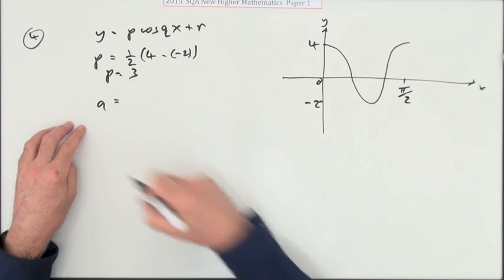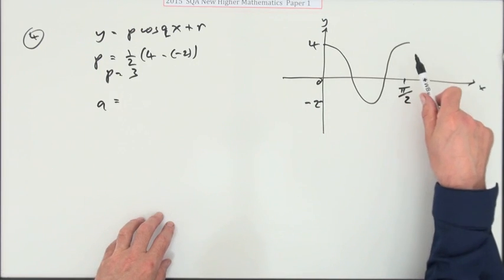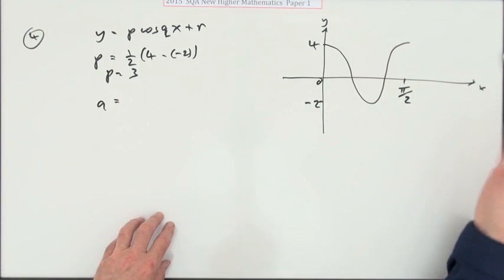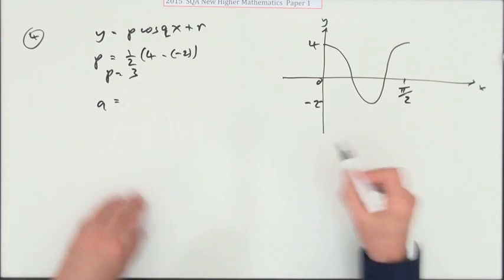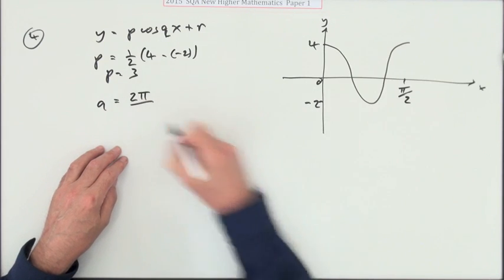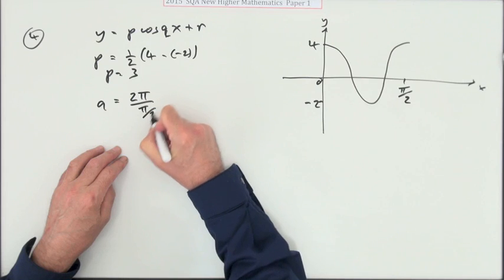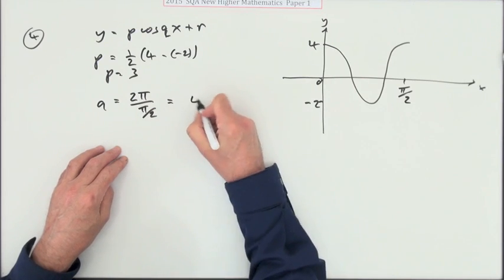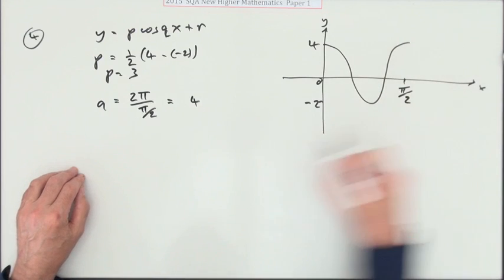q - that would be the frequency. How many times does the complete graph appear by 2 pi? Well, you can show that working: the complete picture would be 2 pi, this finishes by pi upon 2, dividing that out gives you a 4. There would be 4 complete pictures.